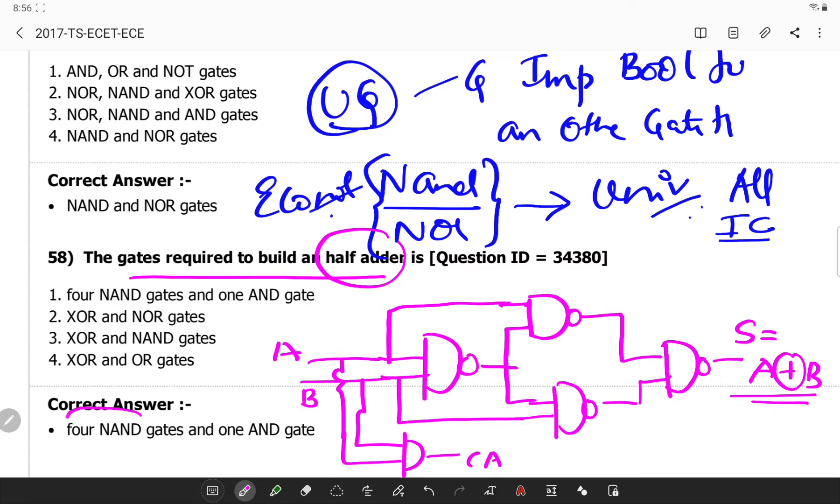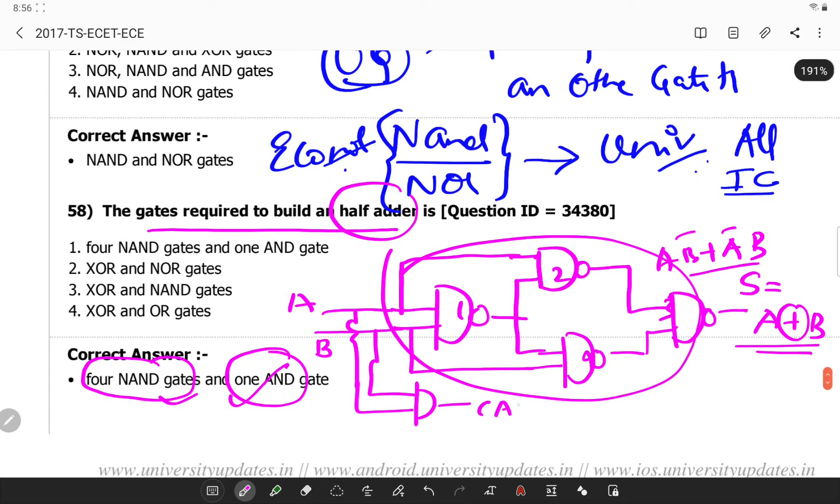Here you will be getting your A XOR B which is the sum expression. So you will be requiring 4 NAND gates and 1 AND gate. Here you will be getting the expression A XOR B bar plus A bar B. That is implemented by this part and this is the carry expression C equals A into B. So the answer is this.